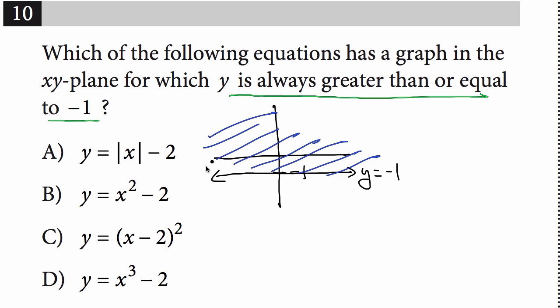Now when we go to our answer choices though, what do we find? We find an equation with negative 2 on the outside. Here's an equation with negative 2 on the outside and the same thing for choice D. We should know that any time you have an equation and a negative whatever is on the outside of the equation, that's a shift down.